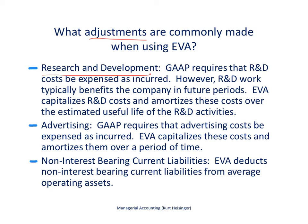However, many companies feel that research and development costs will benefit the company in future periods. For example, if we're a pharmaceutical company spending a lot of money on R&D, those costs may benefit us in the future if we have a viable product from those costs that we are able to sell for future years. As a result, one of the EVA adjustments allows us to capitalize those R&D costs and then amortize them over the estimated useful life of those activities — very similar to how a piece of equipment can be capitalized and depreciated over its useful life.